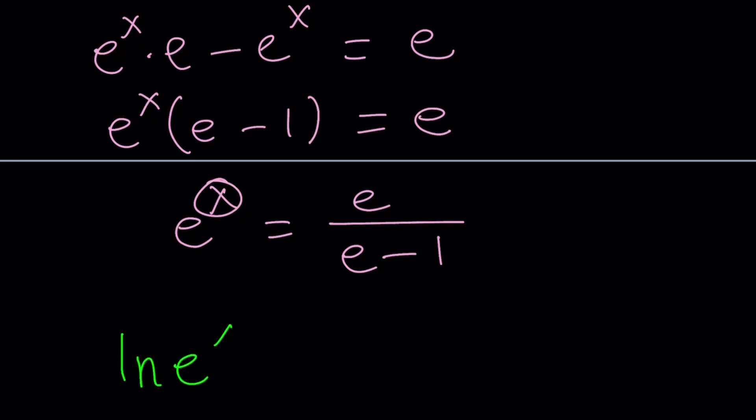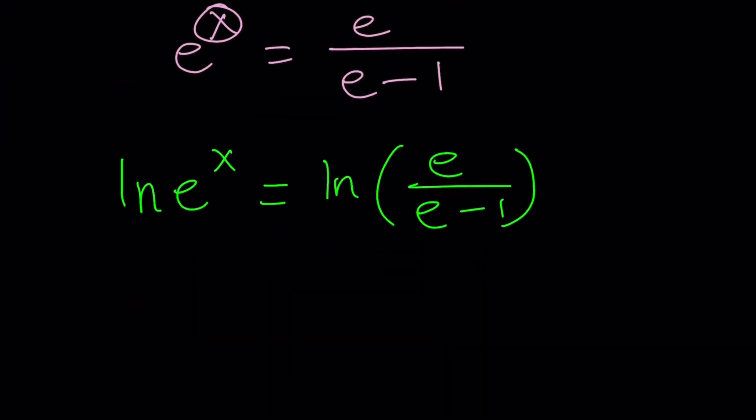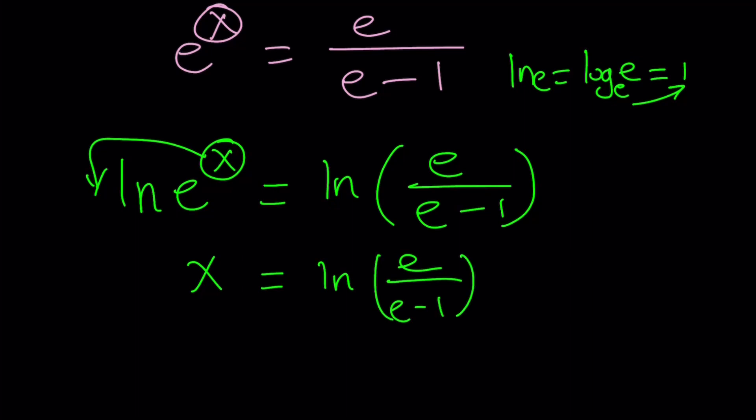Ln of e to the x equals ln of e over e minus 1. This super-duper magical power brings the x to the front, and ln of e is just log e with base e, which is 1 by definition. So this becomes x. In other words, ln of e to the x is x. So x equals ln of e over e minus 1. That is the answer. We were looking for x, and that's it. There's only one solution.